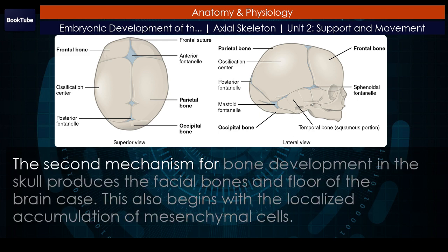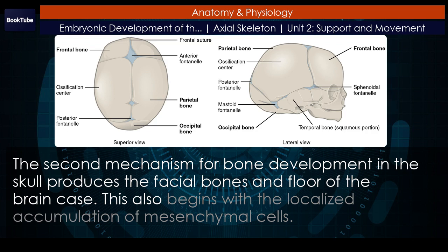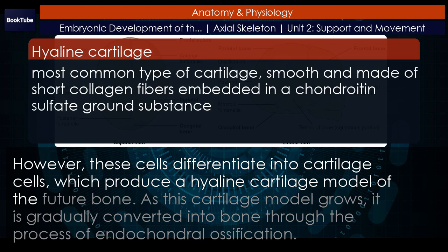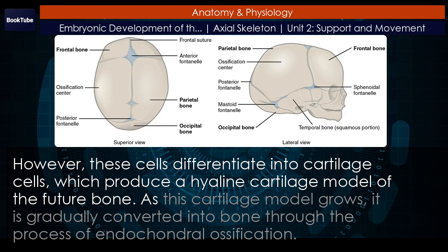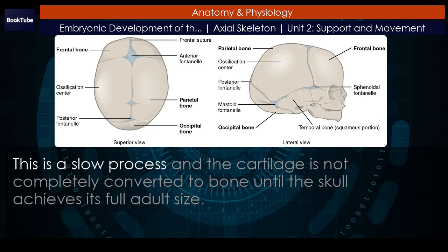The second mechanism for bone development in the skull produces the facial bones and floor of the brain case. This also begins with the localized accumulation of mesenchymal cells. However, these cells differentiate into cartilage cells, which produce a hyaline cartilage model of the future bone. As this cartilage model grows, it is gradually converted into bone through the process of endochondral ossification. This is a slow process and the cartilage is not completely converted to bone until the skull achieves its full adult size.